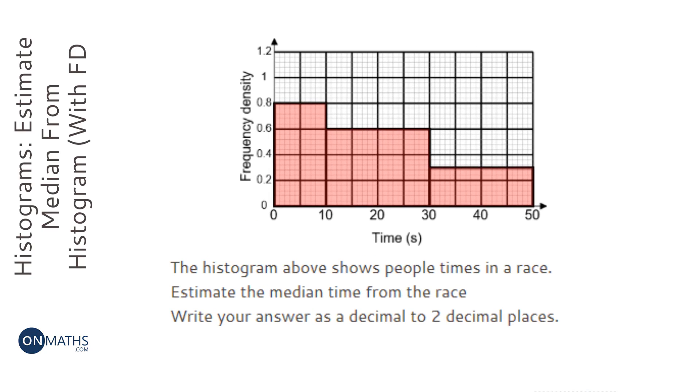We're asked to estimate the median time for the race from this histogram. The first thing we need is our triangle for working out frequencies. Frequency always goes to the top, and then frequency density and class width at the bottom.